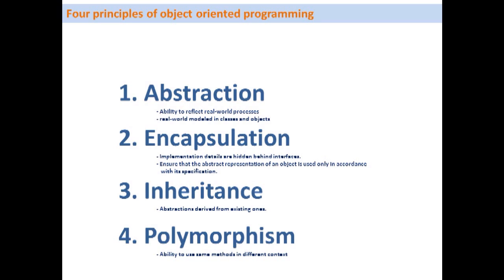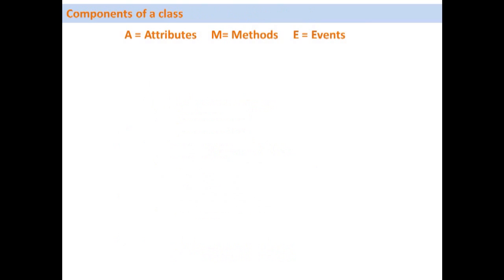Inheritance is the possibility to derive one class from another, and polymorphism is the possibility to use the same method for different objects. A real-world example would be a method called 'open' — we can use this method to open the object 'window', or we can use the same method 'open' to open the object 'door'.